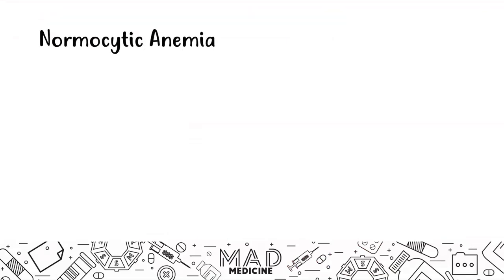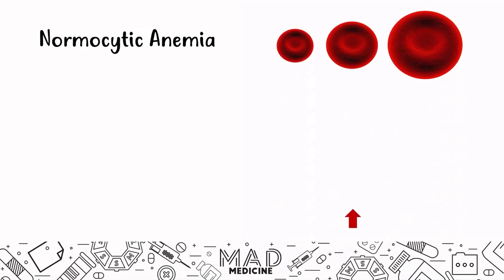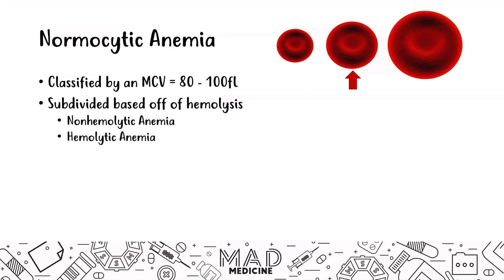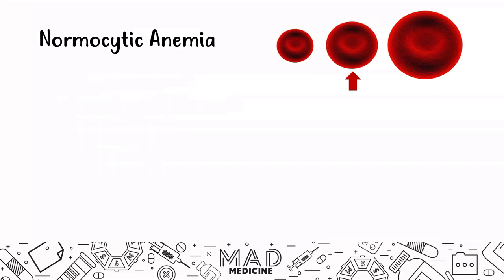Let's begin by talking about normocytic anemias. Normocytic anemias are classified by an MCV that is normal — 80 to 100. They can be subdivided based on non-hemolytic anemias and hemolytic anemias, and the hemolysis can be further subdivided based on intrinsic causes and extrinsic causes.